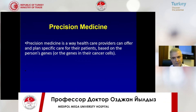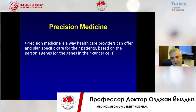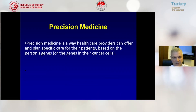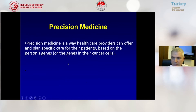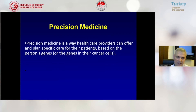If you define precision medicine, precision medicine is a way healthcare providers can offer and plan specific care for their patients based on the person's genes or the genes in their cancer cells.